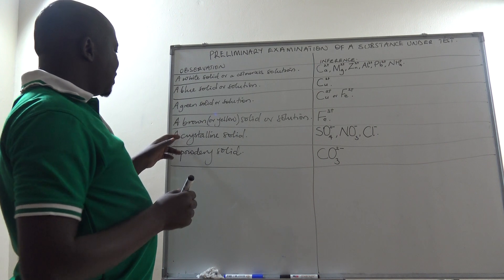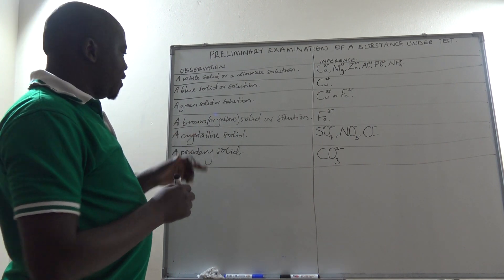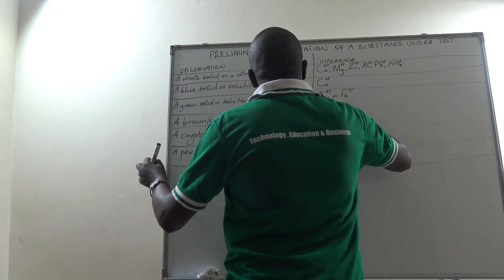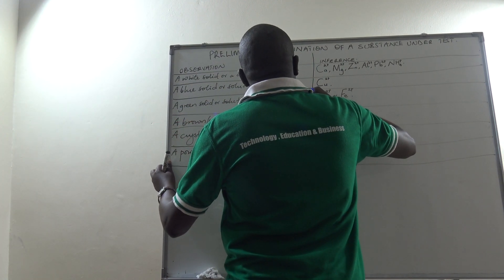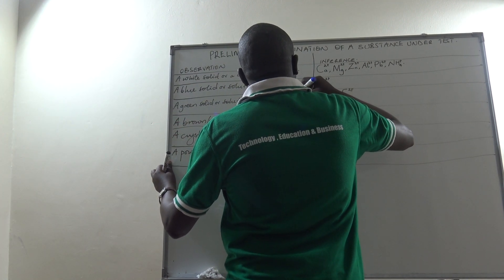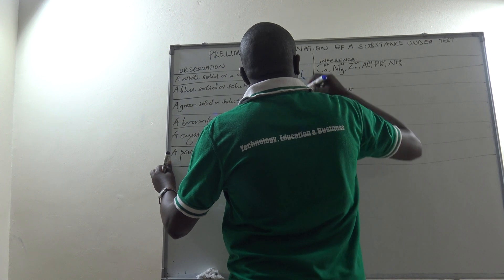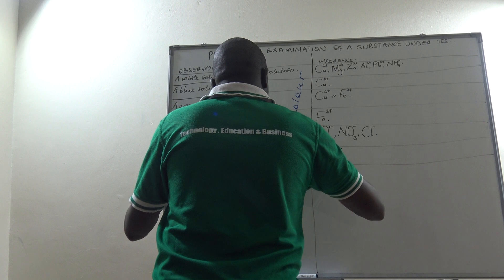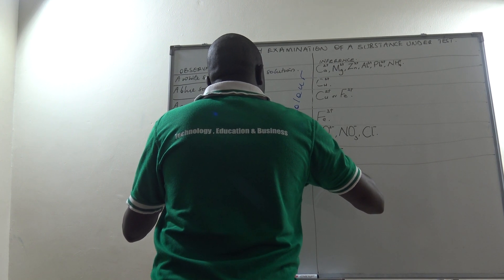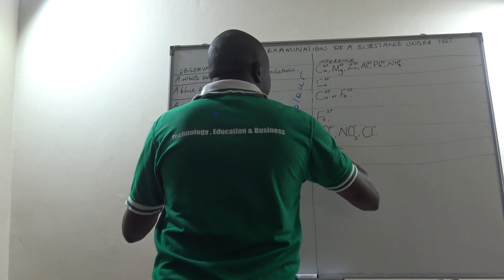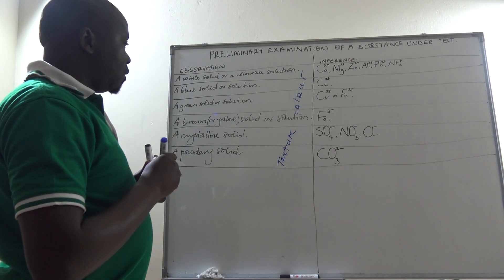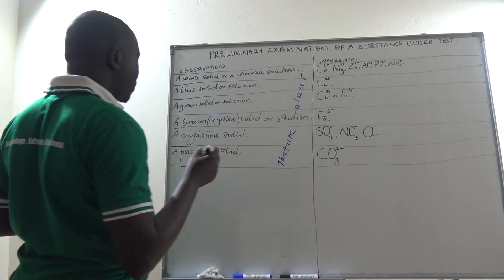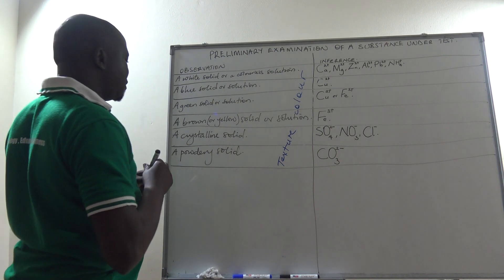So with texture: crystalline and powdery correspond to the anions. These observations for texture pertain to the anions. Let us continue and look at smell.